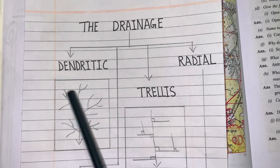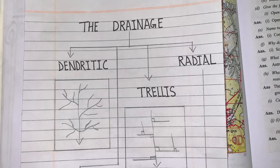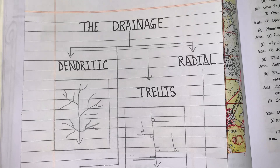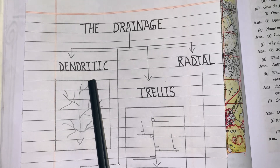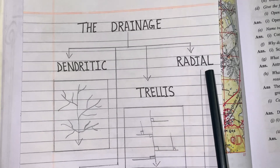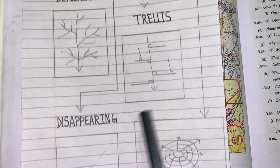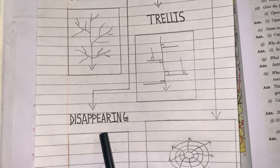The main river along with its tributaries are known as drainage. In a topographical map, you have to identify four different types of drainage patterns: dendritic drainage pattern, trellis drainage pattern, radial drainage pattern, and the fourth one is disappearing drainage pattern.